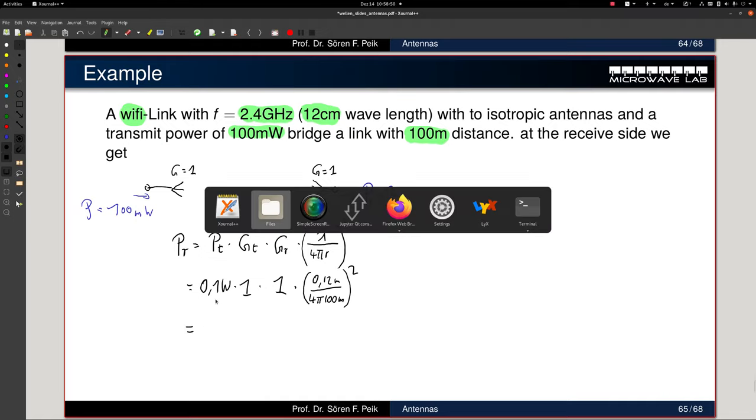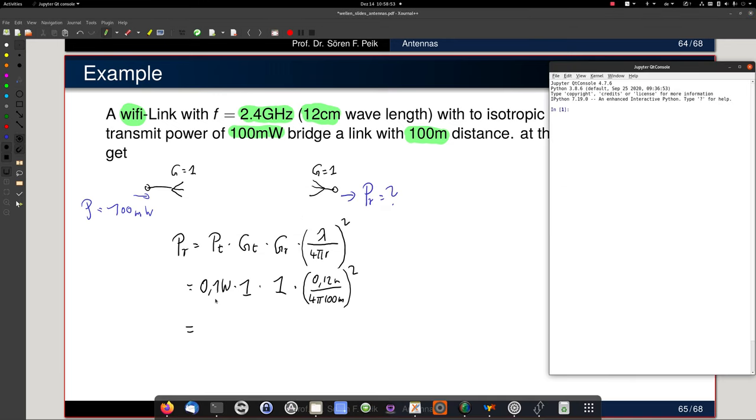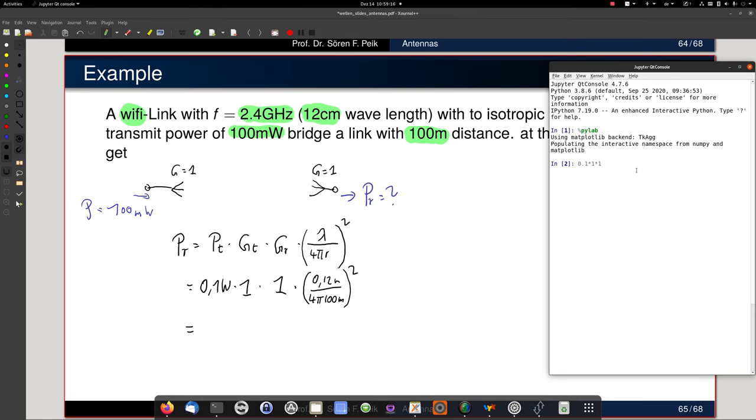This we have to calculate just using a calculator. I opened up my Jupyter console here. I load PyLab, so I have all my math functions. So it's 0.1 times 1 times 1. I can make that a bit bigger and see it better. Okay, so 0.1, 0.1 times 0.12 over 4 over pi over r was 100. So this, and then the whole thing squared times times 2 is square in Python. Hopefully I didn't make a mistake here. Looking good, yeah. Evaluate, and it's 9.11 10 to the minus 10.